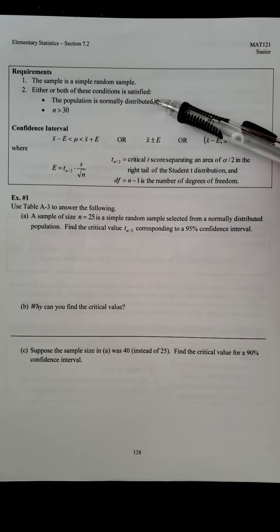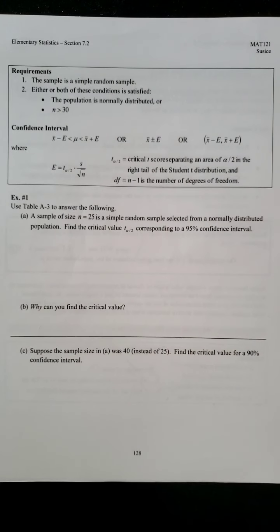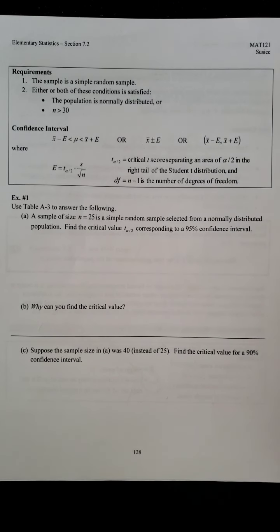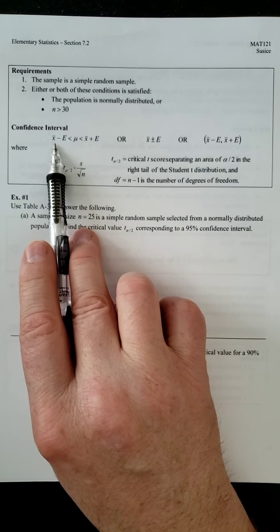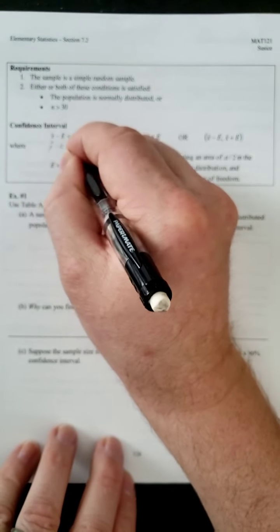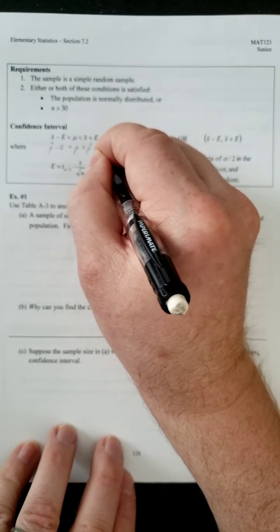So remember, we have to have some guarantee of normalcy in our problem before we can apply these techniques. So it's the same thing here. The population is either normally distributed. So N can be any size we want. Or N is just big enough. If N is big enough, then we can assume it is normally distributed. So our interval notation, you can see, is it's very similar.